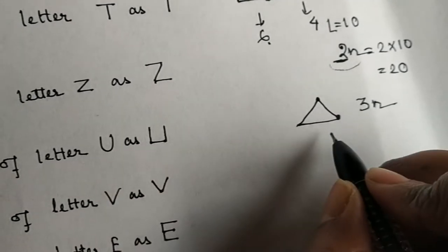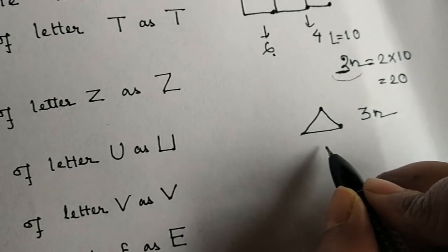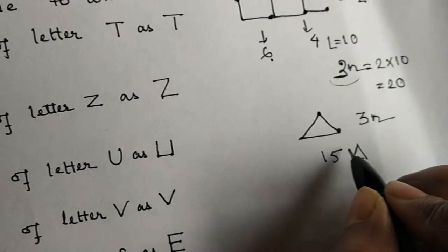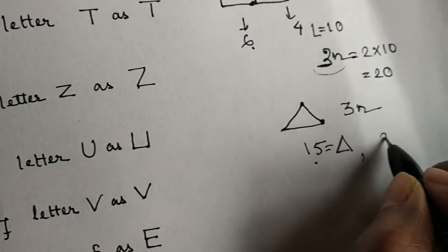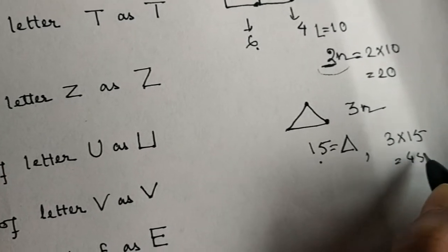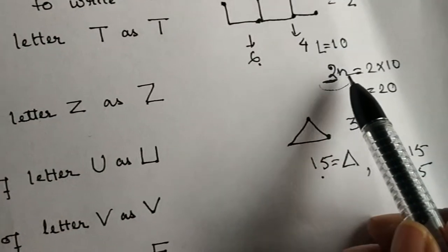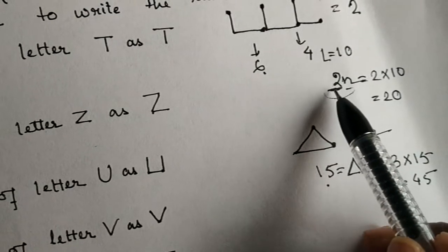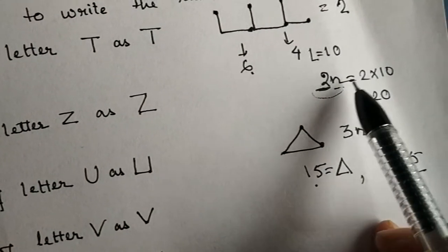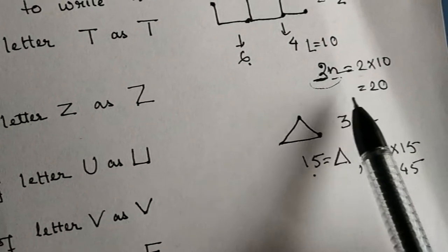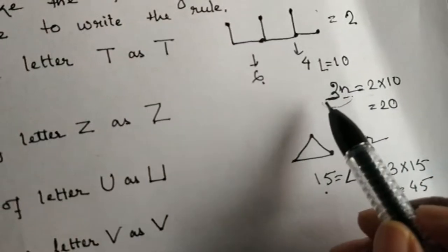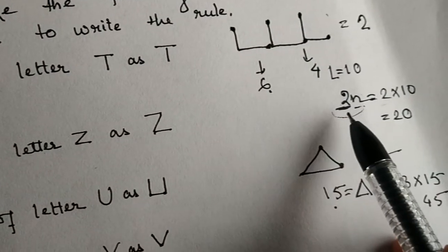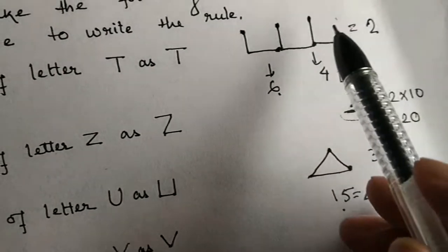Suppose if we need to find the mastics for 15 triangles, then it will be 3 into 15, which is 45. In every case, this N is called a variable. This value varies — it is not fixed. Every time it is changing. Here I have taken 2, here I have taken 15, so it changes. The value of the variable always changes. Whenever you take a letter, first check how many mastics are used in one particular alphabet, and then multiply by how many letters you need.